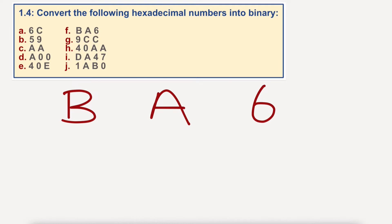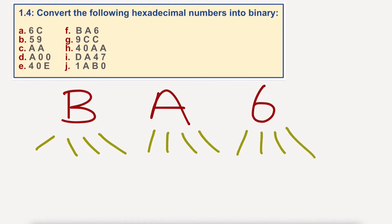Draw some eyelashes: 1, 2, 3, 4 for the first nibble; 1, 2, 3, 4 for the second; 1, 2, 3, 4 for the third; and 1, 2, 3, 4 for the fourth. Then we'll put these little numbers in.